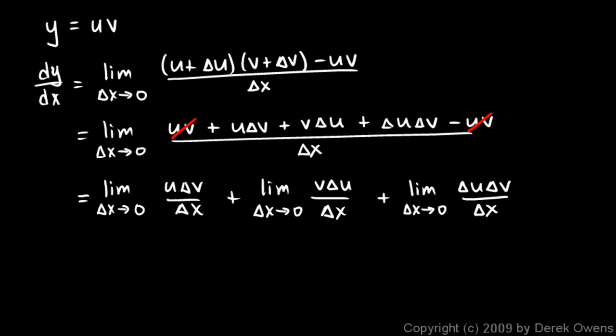Well, as delta x approaches 0, this delta x gets infinitely small and so does this delta v. And what that is, that delta v over delta x, that simply becomes dv dx. That's the derivative of v with respect to x times u. So this first term right here, the limit as delta x approaches 0, of u delta v over delta x simply becomes u times dv dx.